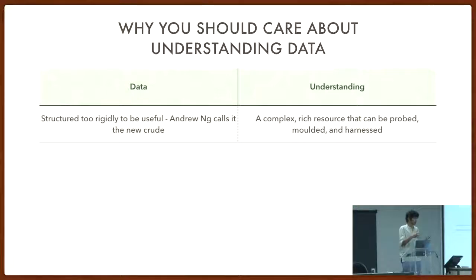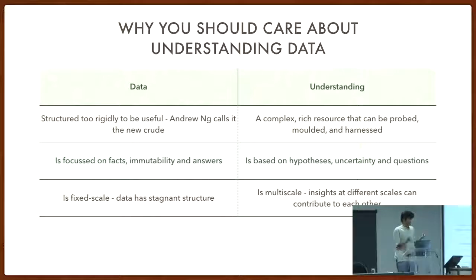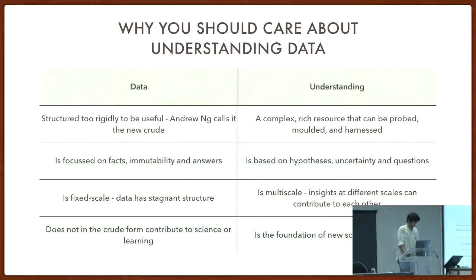To learn something from data — to get science from an experiment — you need to understand the experimental results. Data doesn't change, but understanding is fluid and based on ideas and hypotheses you can use in new situations. Data doesn't change its scale either; it has a fixed structure. But understanding is multi-scale — you can understand something at a small level and use that to understand something at a different level. Understanding is really what machine learning should be.